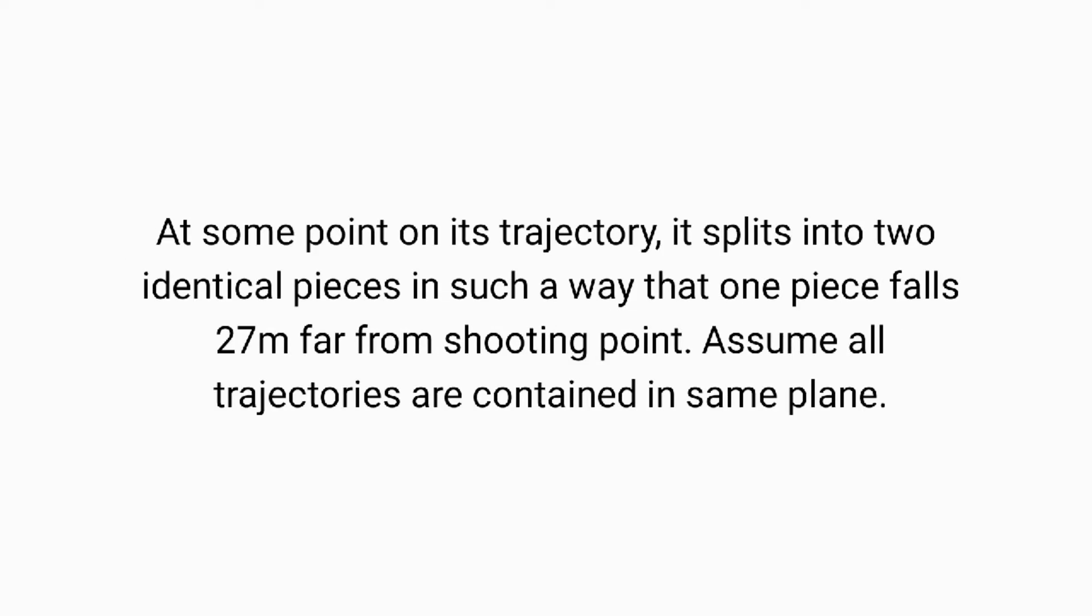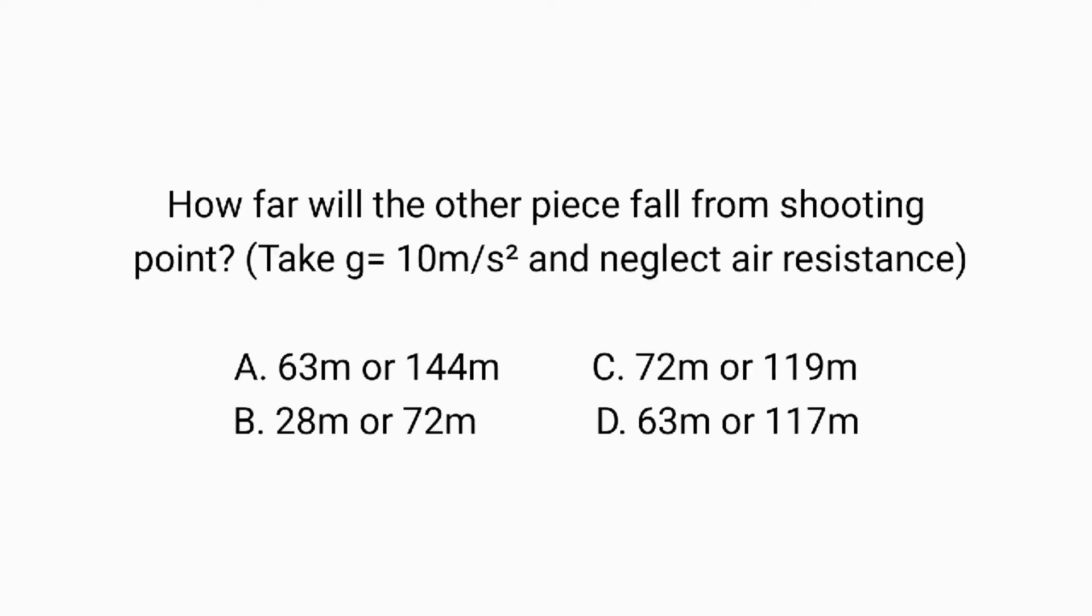A firecracker is thrown with a velocity of 30 meters per second in a direction which makes an angle 75 degrees with the vertical axis. At some point on its trajectory, it splits into two identical pieces in such a way that one piece falls 27 meters from the shooting point. How far will the other piece fall from shooting point? Take g equal to 10 meters per second squared and assume the trajectory of the whole system lies on the same plane. Here are the options.